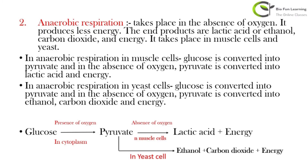Anaerobic respiration takes place in the absence of oxygen — there is no oxygen requirement. Very little energy is produced. The end products of anaerobic respiration are lactic acid or ethanol, carbon dioxide, and energy. Anaerobic respiration occurs in muscle cells and in yeast. In muscle cells, glucose converts to pyruvate, and pyruvate converts to lactic acid and energy. In yeast cells, pyruvate converts to ethanol, carbon dioxide, and energy.